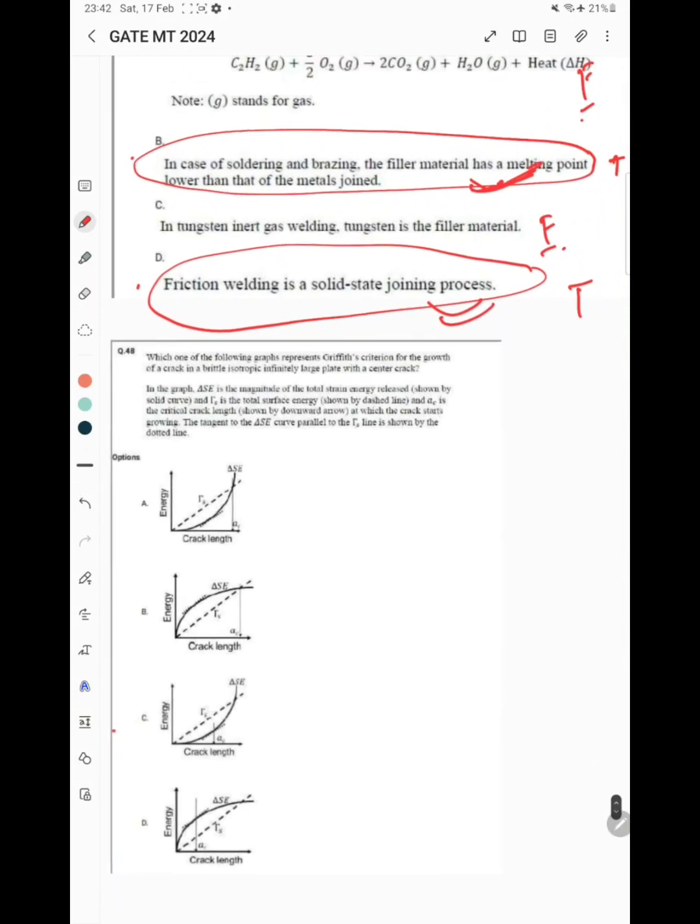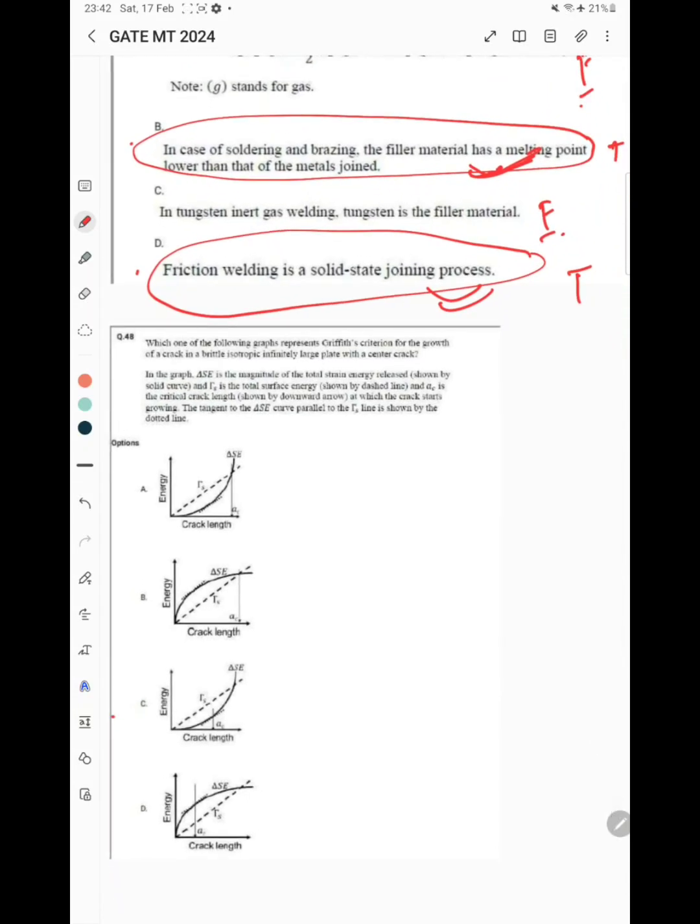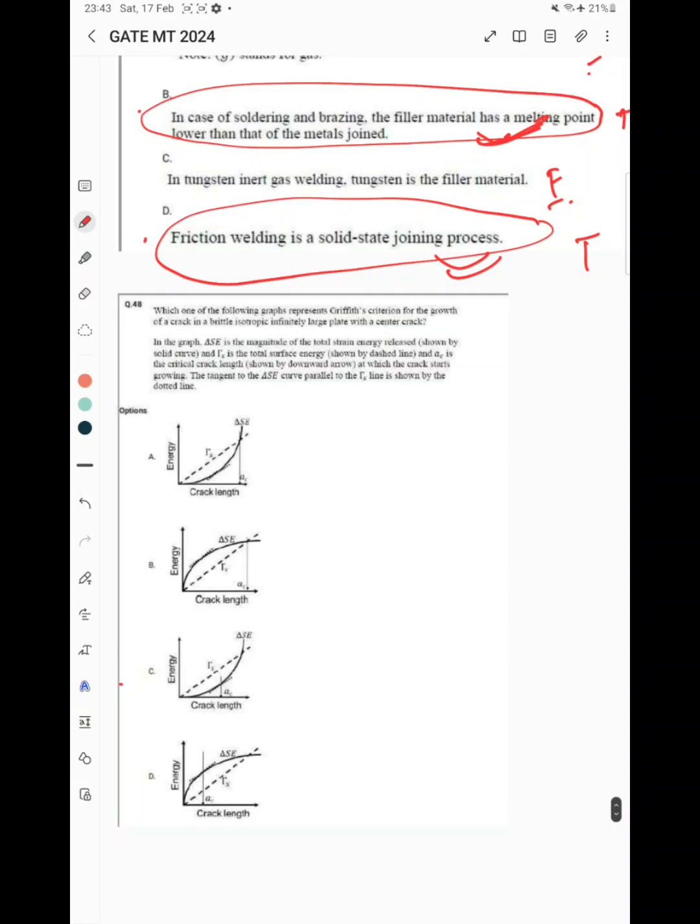The next question is on Griffith criteria. Which one of the following graphs represents Griffith criteria for the growth of a crack in a brittle isotropic infinitely large plate with a center crack? If you have an infinitely large plate with a center crack length...